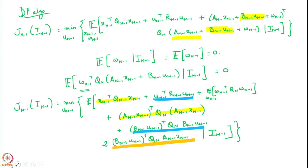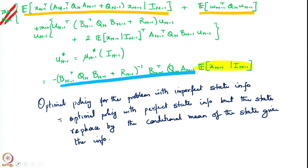We were applying the dynamic programming algorithm and did this for time step n-1. We discovered an amazing fact: the optimal policy mu_{n-1}^* at time step n-1 is the same as the optimal policy for the perfect state information case. This policy is exactly what you would have gotten assuming perfect state information. However, the policy has to be applied not on the state itself — since we do not have that information — but on the conditional expectation of the state given the information, i.e., the best estimate of the state at that time.